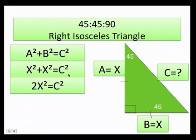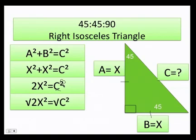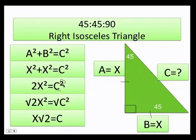Adding x squared plus x squared gives 2x squared equals c squared. To solve for c, I need to square root both sides. Remember, the square root cancels the square. So my final answer is c equals x times the square root of 2, which comes from the square root of 2x squared giving x√2.